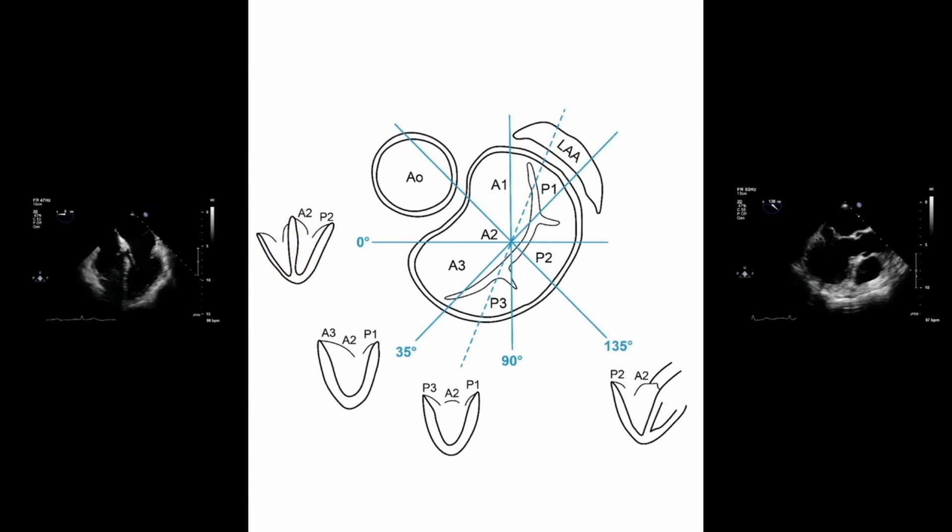The four chamber view is obtained with an imaging plane angle of zero degrees and this cuts through the mitral valve leaflets at the level of the A2 and the P2 segments. So here we have the A2 segment and here we have the P2 segment.